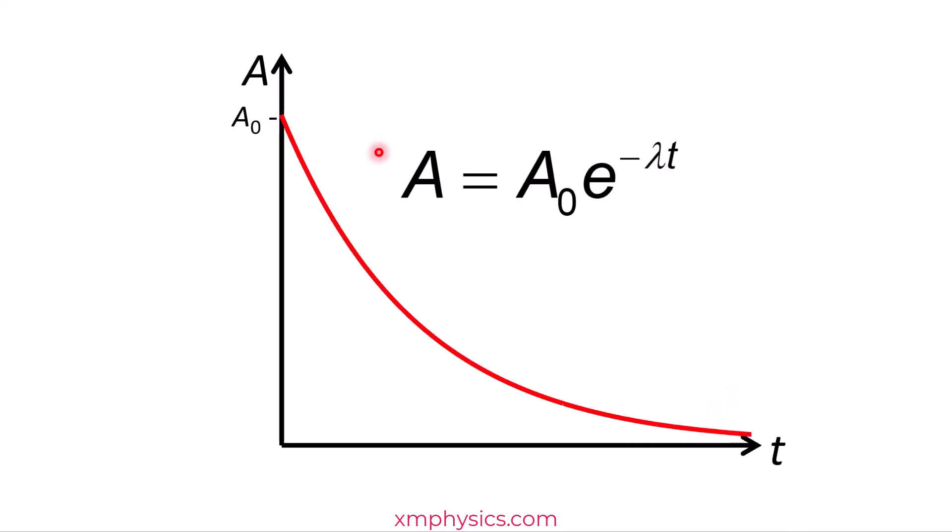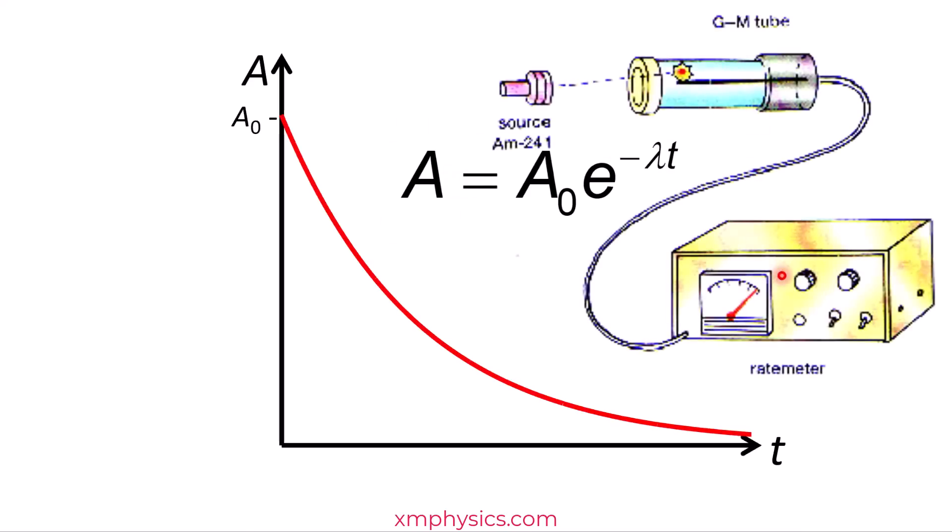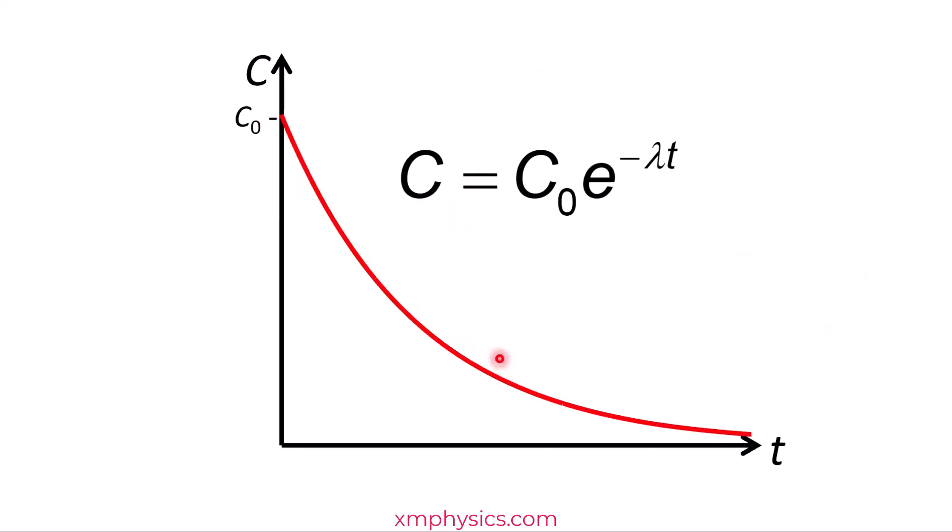In practice, how do we measure A? We use a GM tube that gives us some count rate. Now the count rate is not exactly equals to the activity because not every decay results in a radiation particle that enters the GM tube. And not every radiation particle that enters the GM tube triggers a count. But then it's reasonable to assume that the count rate is proportional to the number of decay per unit time. So if the count rate is proportional to activity, then the count rate should also decrease exponentially with time. So N, A and C all decay exponentially with time.